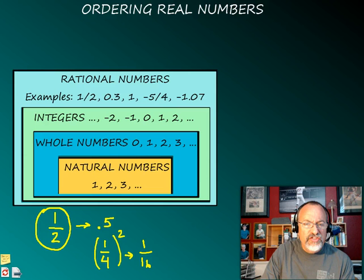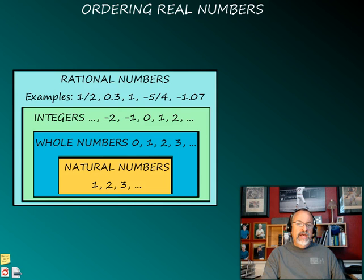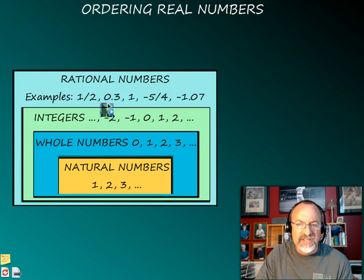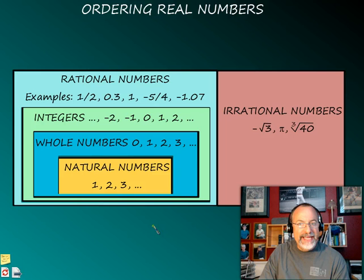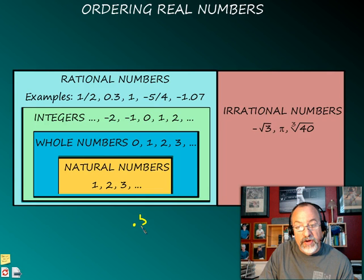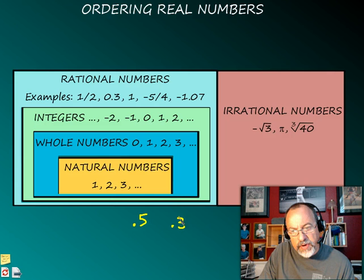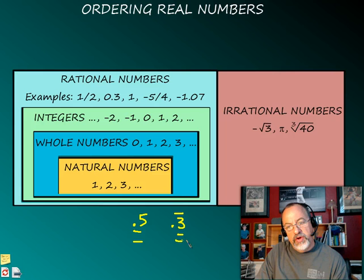We're going to add in another set of numbers here that really has no relation to these — it doesn't fit with any of them. These are called irrational numbers. An irrational number is a number that, if you were to look at its decimal form, the decimal form would never end — like 0.5, that ends — or it never repeats, like 0.3 repeating. If you have a number that doesn't do either one of these, then you have what we call an irrational number.